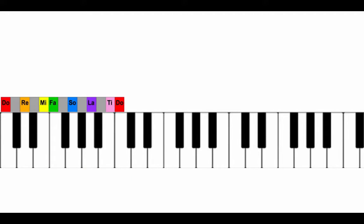Let's start with C. From C to G is a fifth — it's also DO to SO. Looking at the keyboard, we've got DO, RE, MI, FA, SO, LA, TI, DO — in this case C, D, E, F, G, A, B, C. From DO to SO is the interval of a fifth: C, D, E, F, G — that's five notes, so that's a fifth.